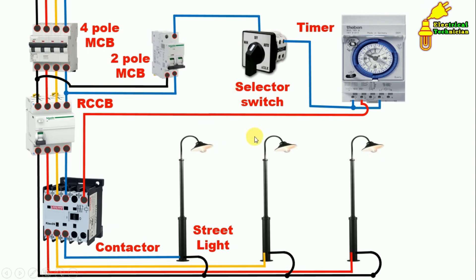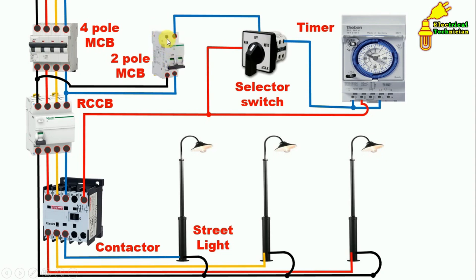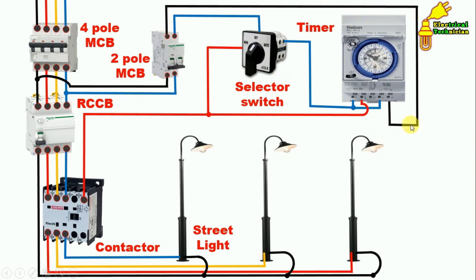For manual mode, change the selector switch to manual position. From the wire connected here, get continuity to the manual terminals and connect a wire with the A1 terminal of the contactor. When the selector switch is in manual position, power supply goes directly to the contactor; in auto position, power supply goes through the timer. For neutral supply, from the outgoing terminal of the MCB connect a wire to the neutral terminal of the timer, then loop a wire from there to provide neutral supply to the contactor.